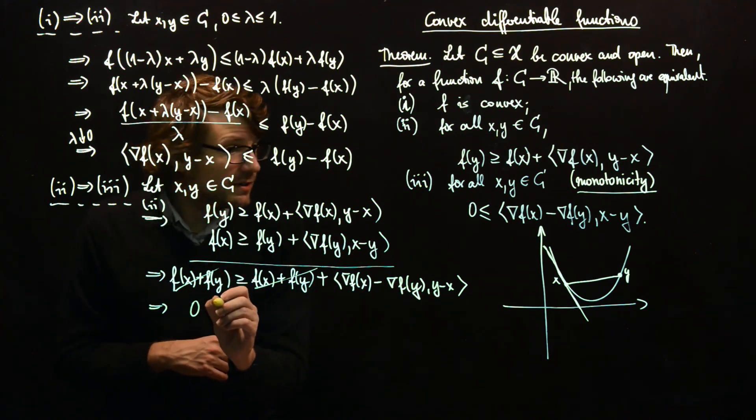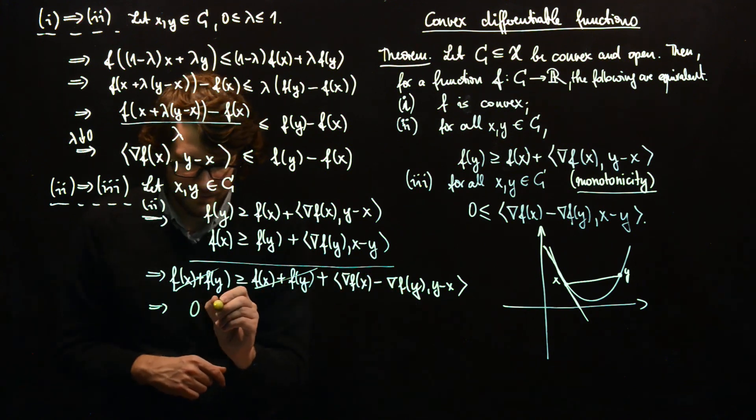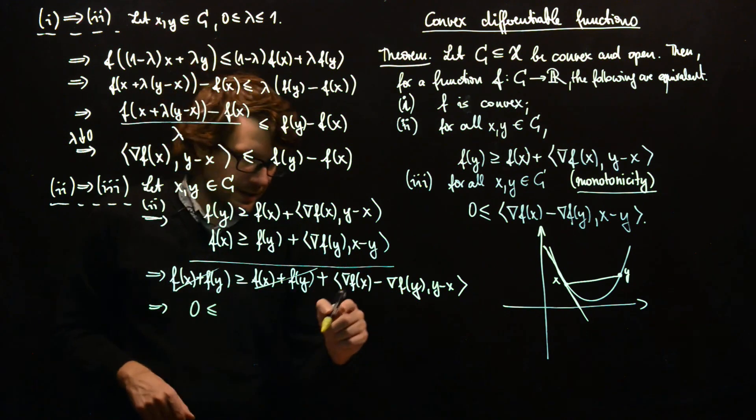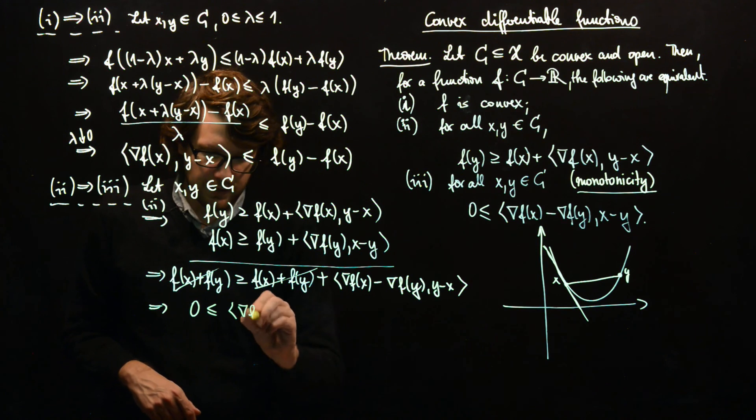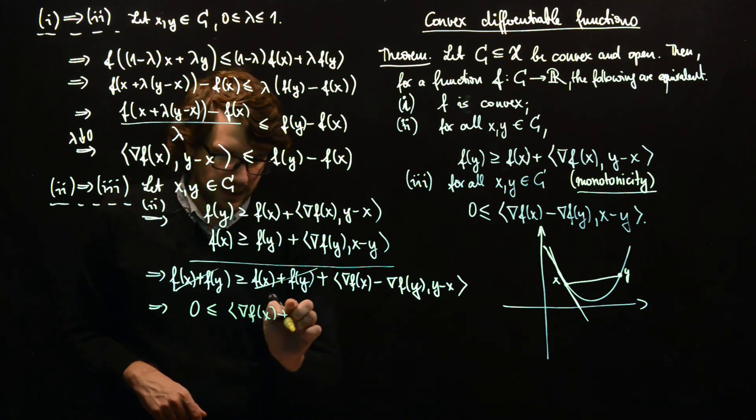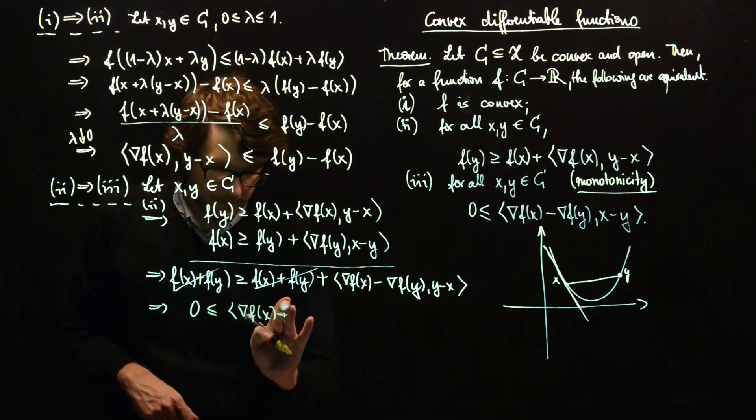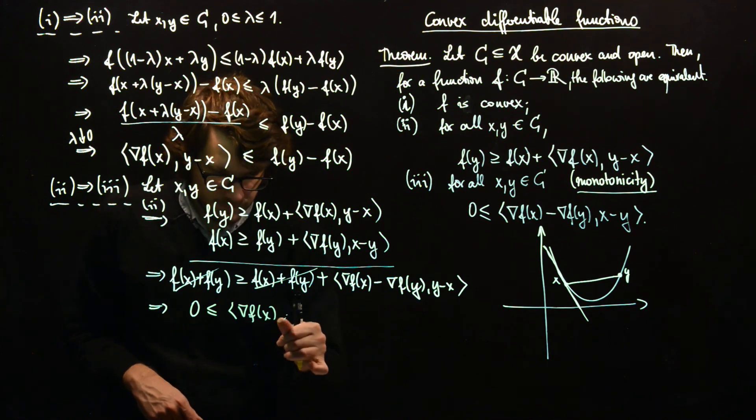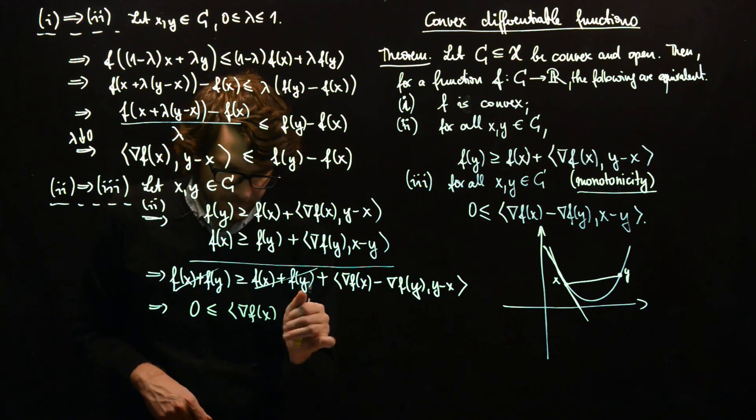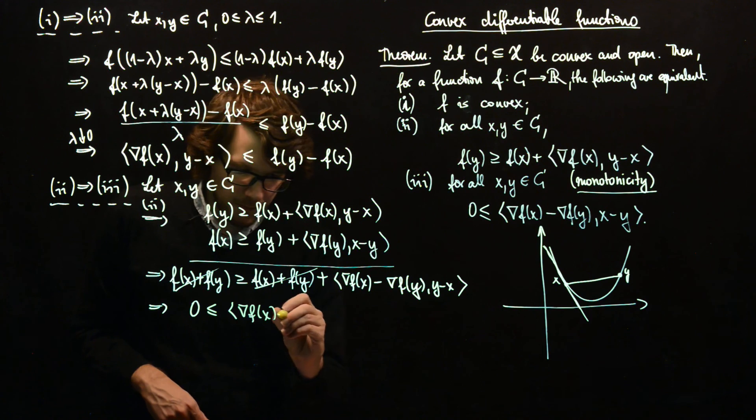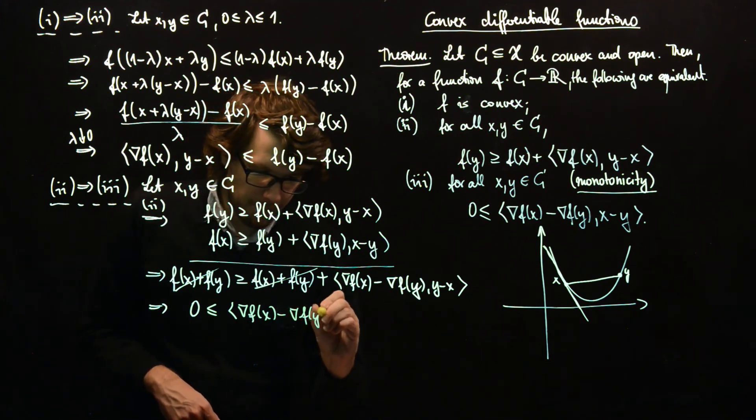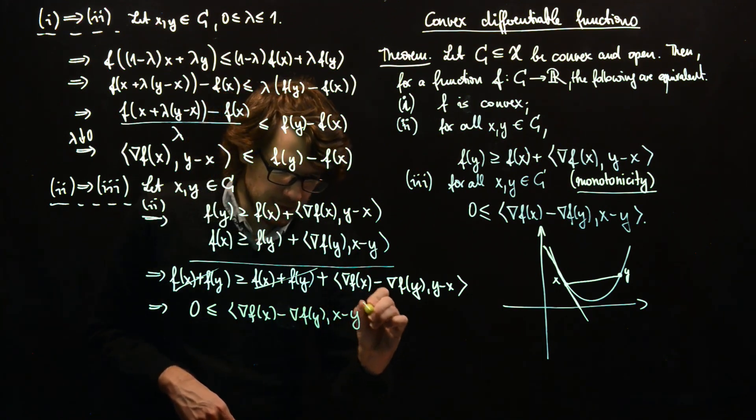And since these things are like the same we can neglect them on both sides. And therefore if we bring this to the other side, then we have 0 ≤ ⟨∇F(X) - ∇F(Y), X - Y⟩.